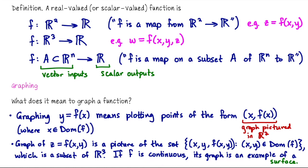I haven't formally defined what continuous means or what a surface is, but we're going to build up our understanding of surfaces throughout this unit. When we graph a function of the form y equals f(x), we expect it to trace out a curve in R², assuming the function is nice and continuous — something like y equals x squared gives us a parabola. A scalar-valued function of two variables, z equals f(x,y), if continuous, will produce the shape of a surface.